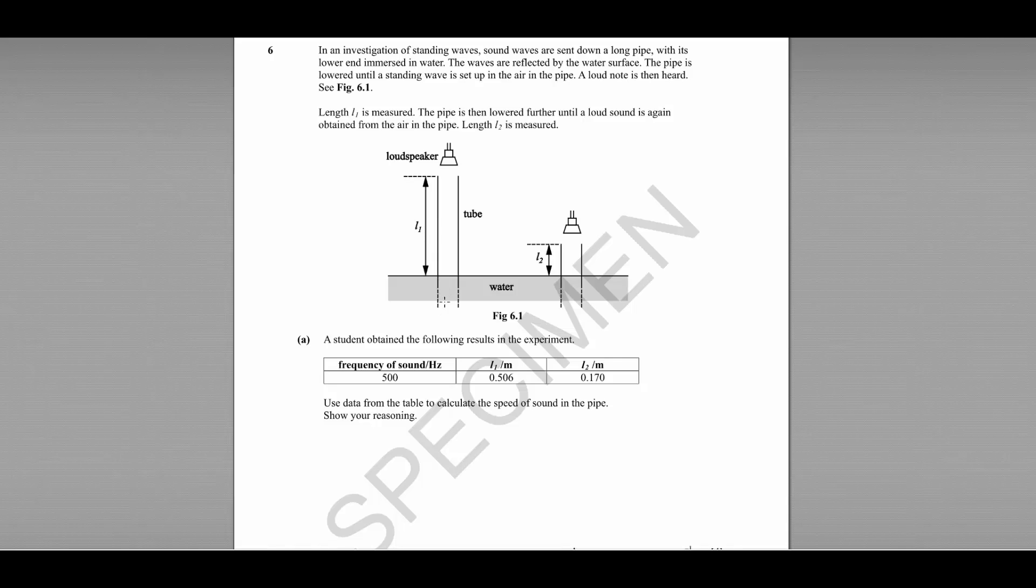You will then hear a loud note, that's resonance. Then measure that length. Then it's lowered again until the loud sound is heard a second time. This is a second resonant frequency. It's one of the harmonics and they measure this length.